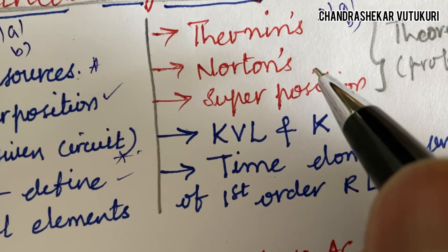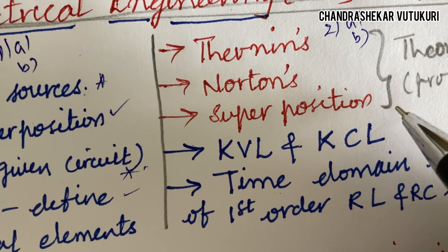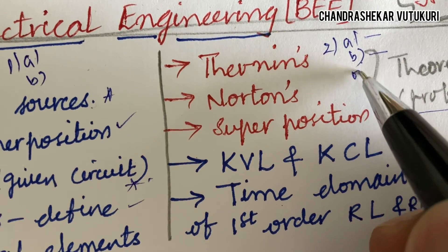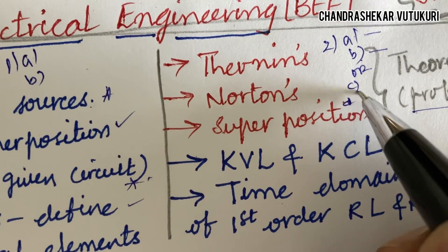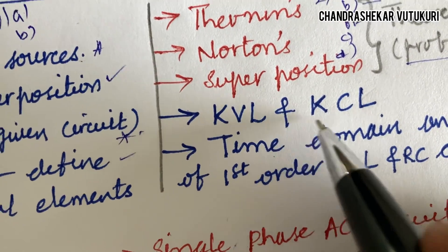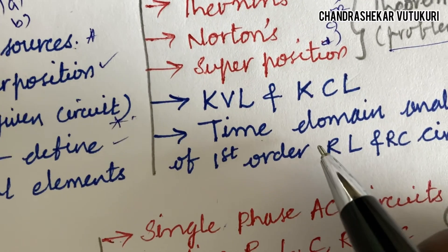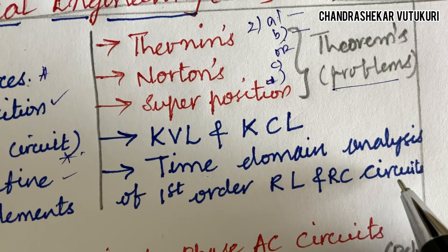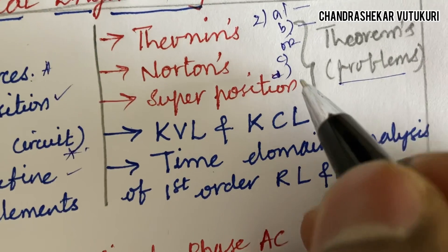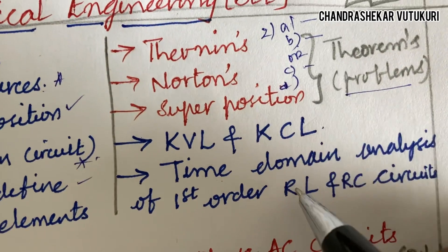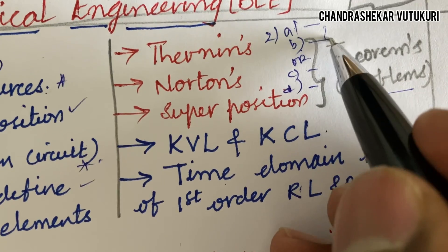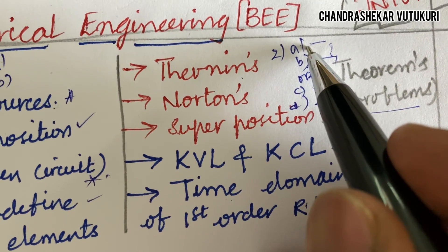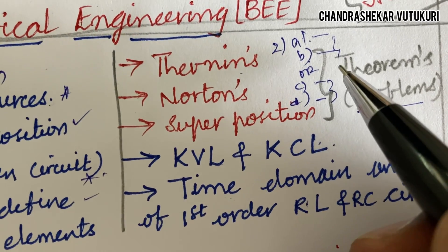2AB may cover Thevenin's, Norton's, or the Superposition theorems along with problems. You will be getting any two theorems in A and B, or C and D. C and D may be KVL and KCL or the time-domain analysis of first-order RL and RC circuits for DS students. I cannot give you an assurance that Thevenin's may come in A or KVL may come in B — sometimes they may jump around.